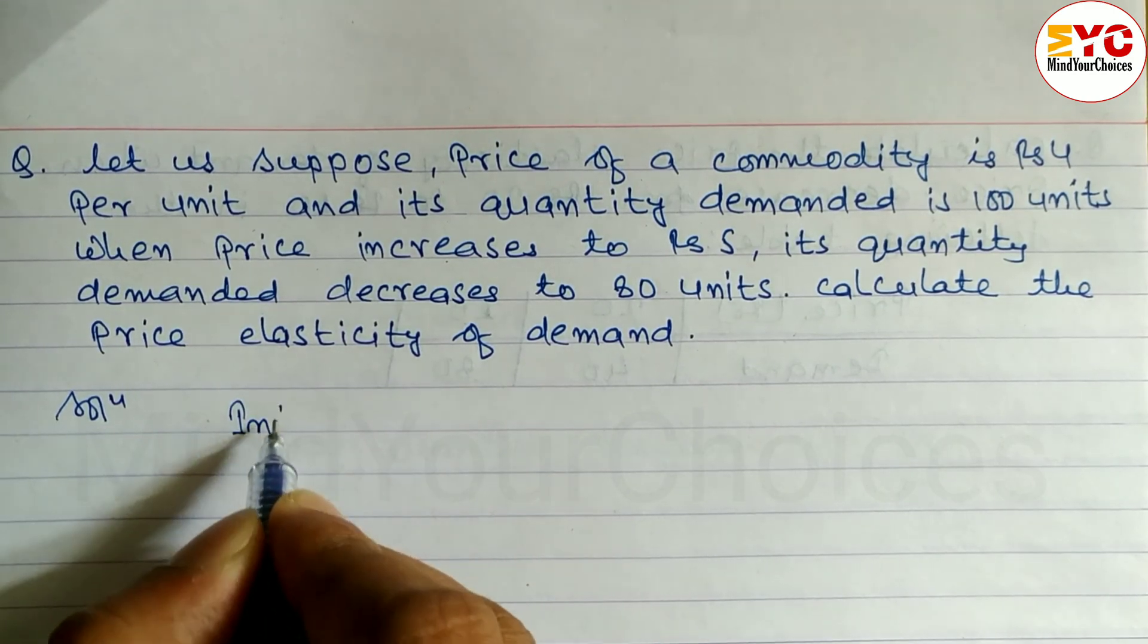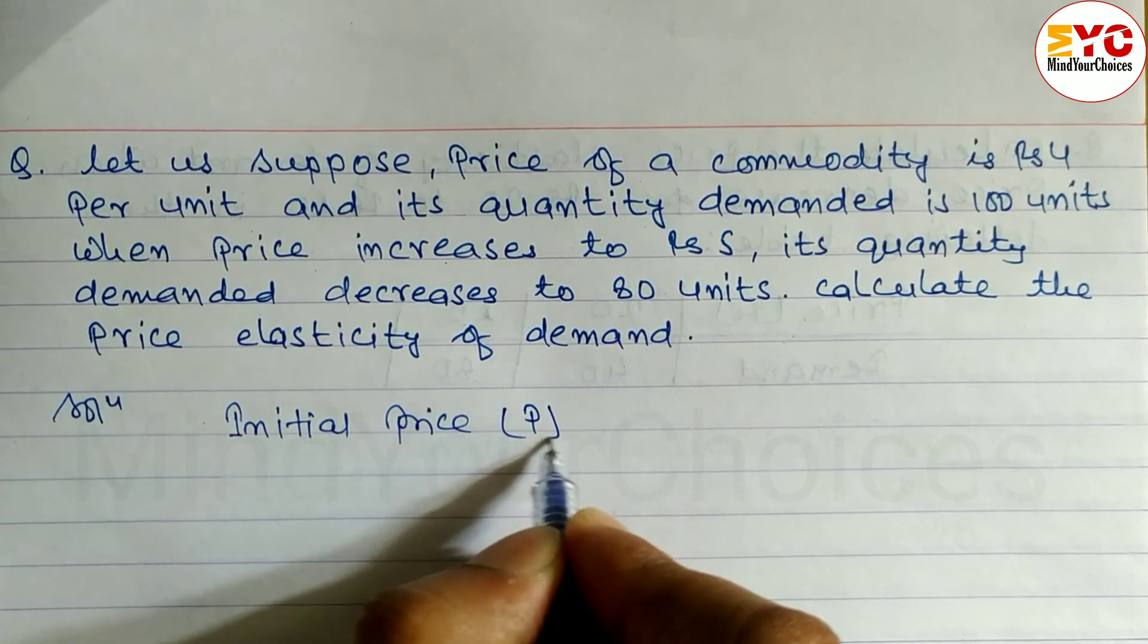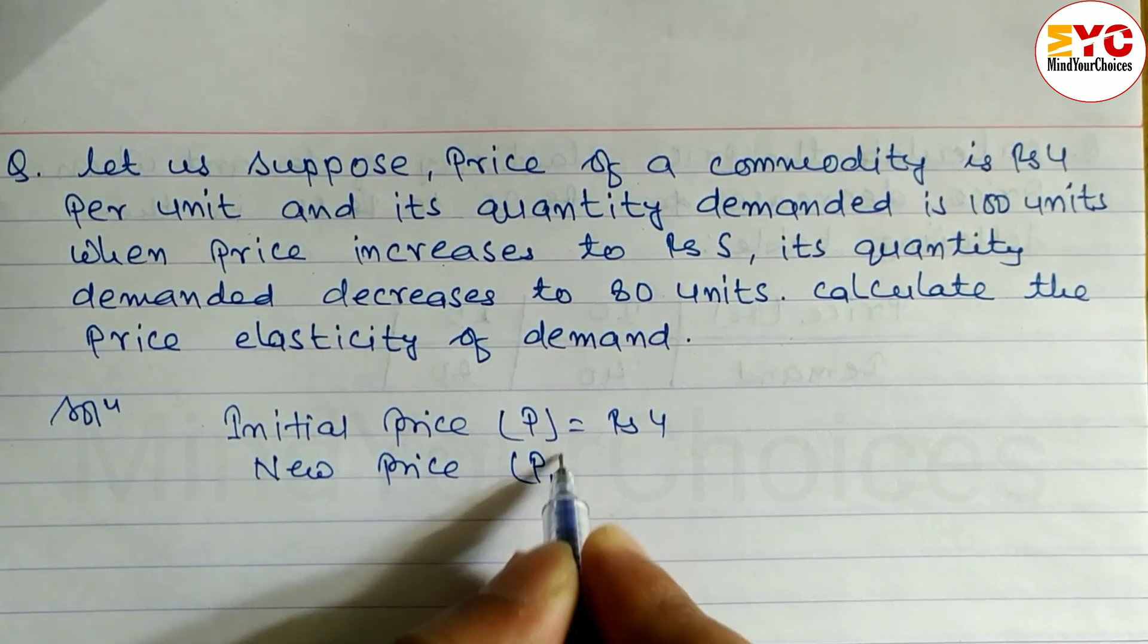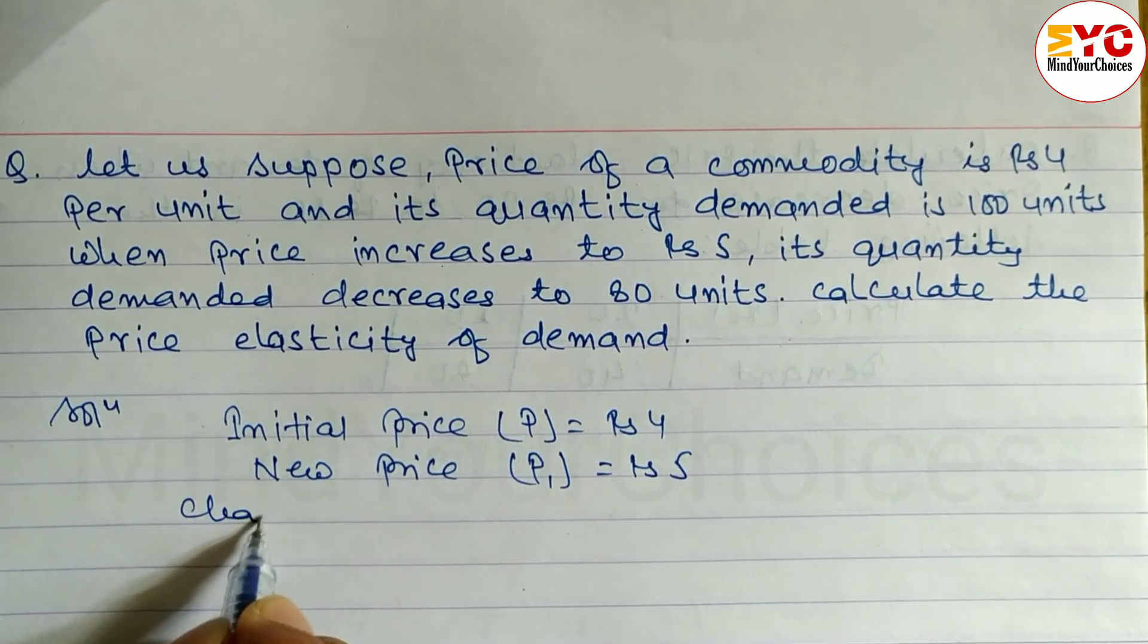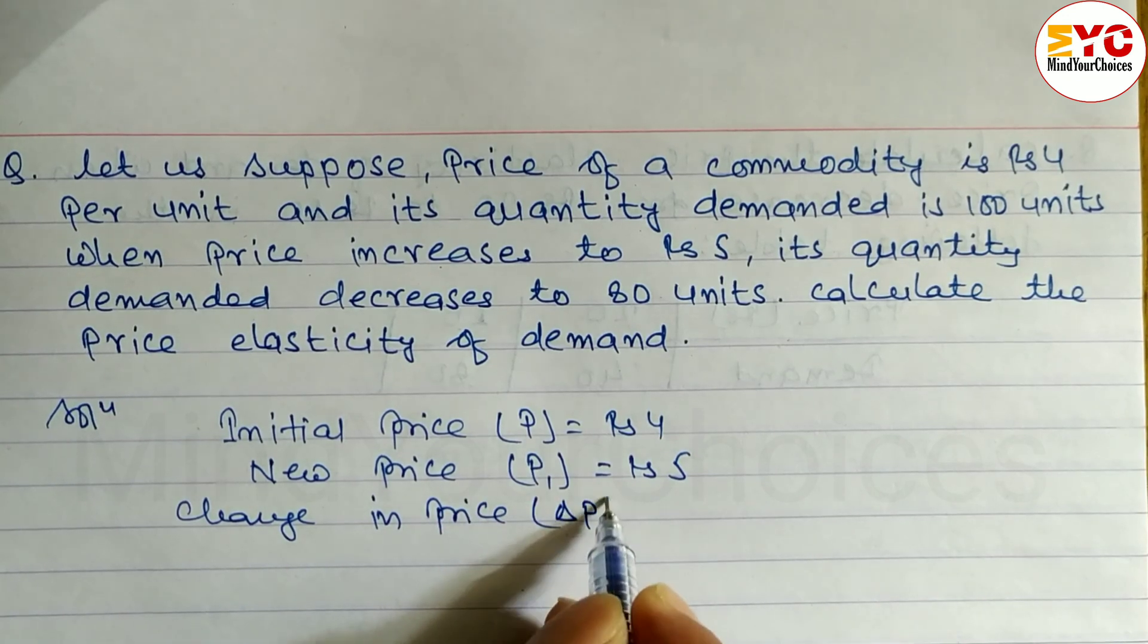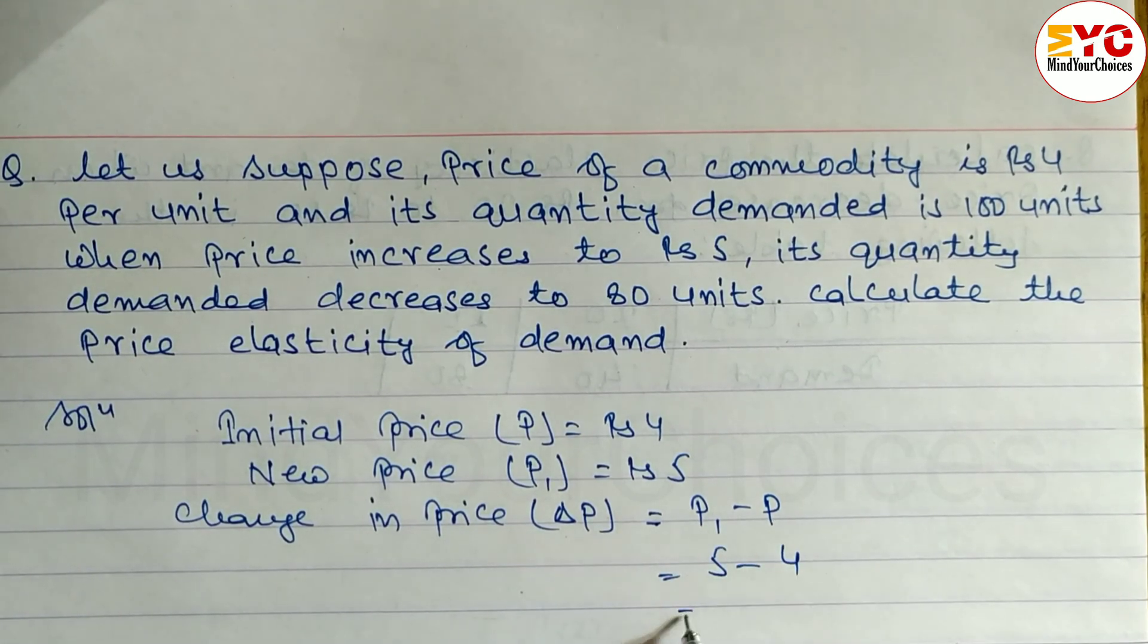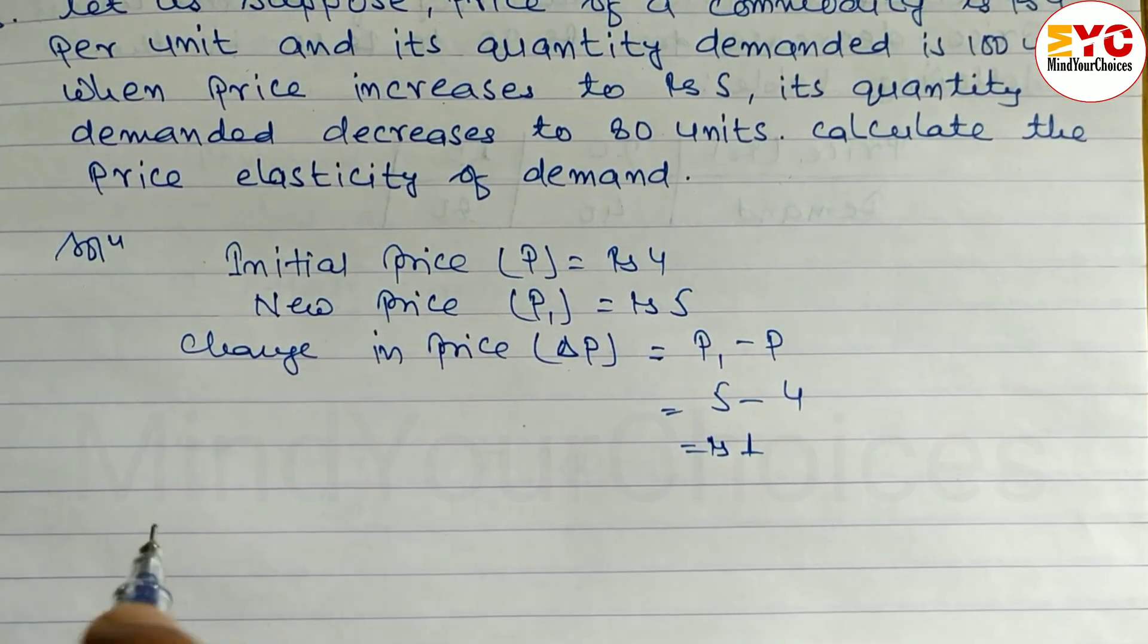So let us write down: Initial Price (P) equals Rs. 4. New Price (P₁) equals Rs. 5. Change in price, denoted by ΔP, and the formula is P₁ minus P, which equals 5 minus 4, equals Rs. 1.